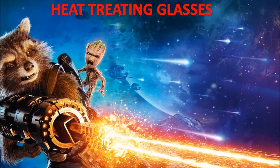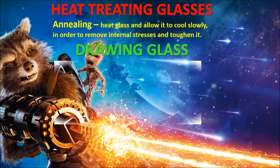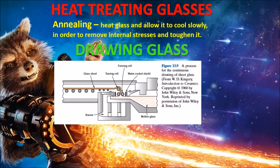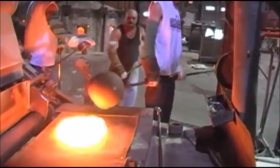Next, we have heat-treating glasses. Annealing is heating the glass and allowing it to cool slowly in order to remove internal stress and toughen it — needed in the drawing process. Here is a picture showing the drawing process, with a heated portion followed by a cooled portion. For thermal tempering, glass is heated above the transition region but below the softening point, then cooled so the exterior becomes rigid while the interior is still plastic — which is why tempered phone screen glass shatters into small gel-like pieces when broken.